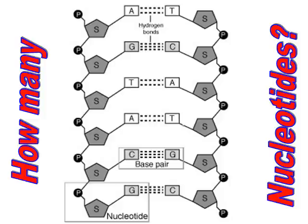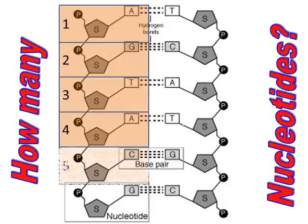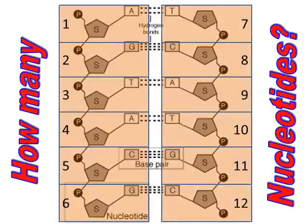Let's take a step back — pause the video and try to answer this question: how many nucleotides do you see in this picture? I'm going to show the answer in three, two, one. A nucleotide is one combination of a sugar, phosphate, and nitrogen base. I just highlighted the answer — there are 12 of them: six on the left connected by hydrogen bonds to six on the right.